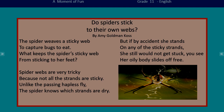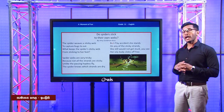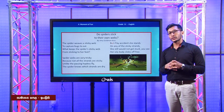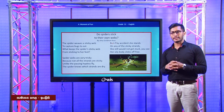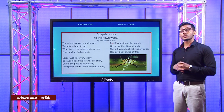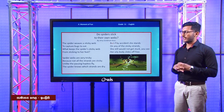Unlike the passing hapless fly, the spiders know which strands are dry. But if by accident she stands on any of the sticky strands, she still would not get stuck. You see, her oily body slides off free. What do you mean by 'sticky'? If something is sticky, it's like glue in texture. We also have the word 'tricky' — if something is tricky, it makes you believe something false. We also have the word 'strands' — strands are thin threads.